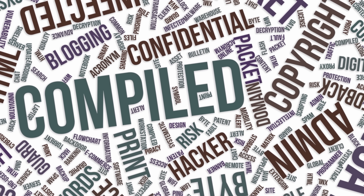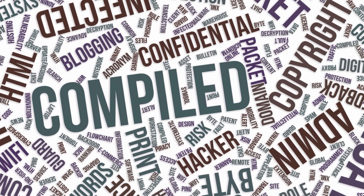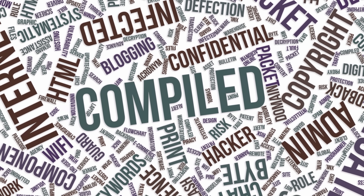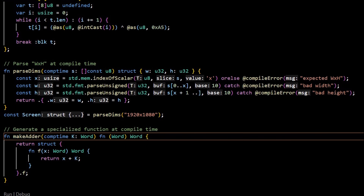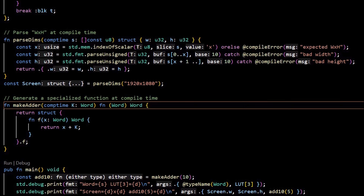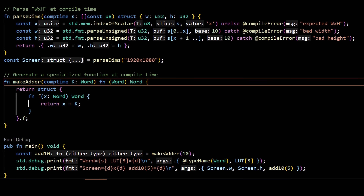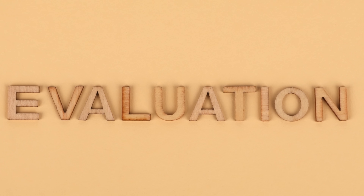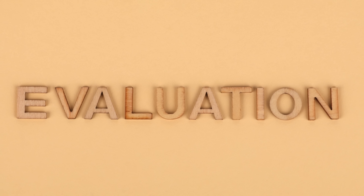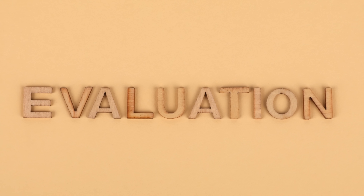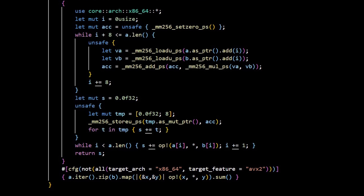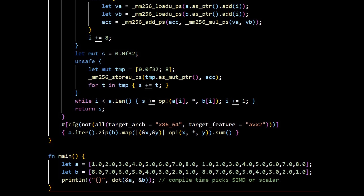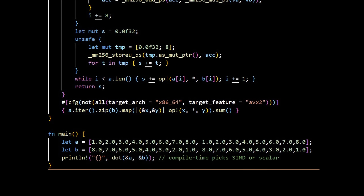Metaprogramming is another place where metal shows up. Zig lets you run code at compile time and generate types, values, and functions based on real-world conditions — like probing target features, calculating table data, or building parsers. It's plain Zig, not a template language. The benefit is you can dial in zero-overhead specialization while staying inside the language. Rust's answer is const evaluation, macros — both declarative and procedural — and trait-based specialization patterns. You can carve incredibly tight code paths with compile-time dispatch, SIMD intrinsics, and link-time optimizations. The learning curve is steeper, but the end result is similar: specialized code with no runtime baggage.